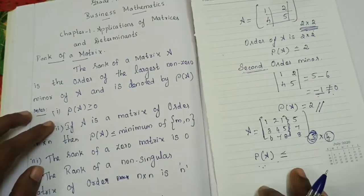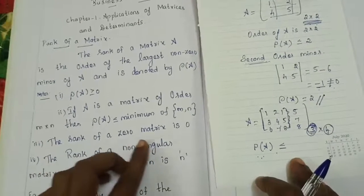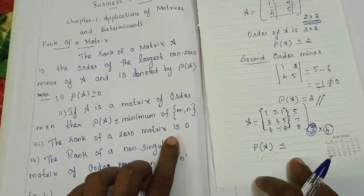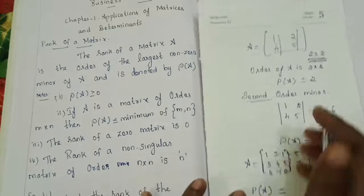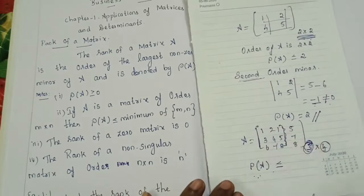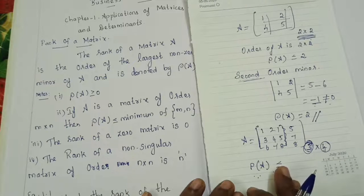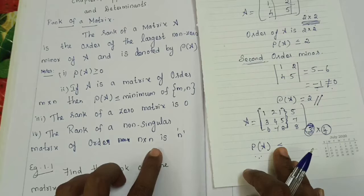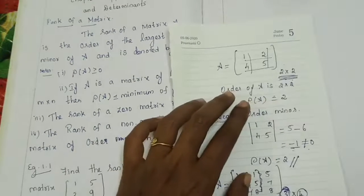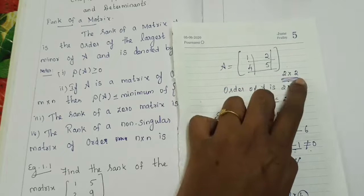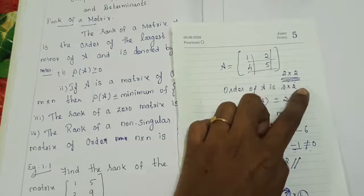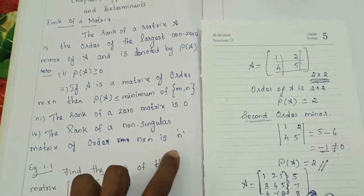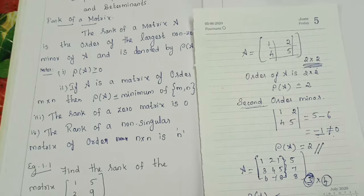Third note: the rank of a zero matrix is 0. A zero matrix means a null matrix — all entries are 0. When finding the rank, you will get 0. Fourth note: the rank of a non-singular matrix of order n cross n is n. For a 2 cross 2 or 3 cross 3 non-singular matrix, the rank equals n.